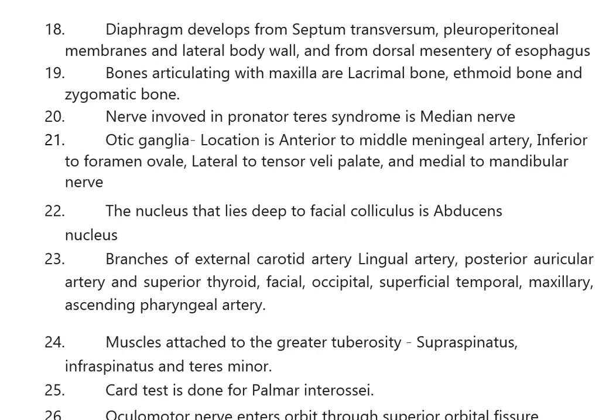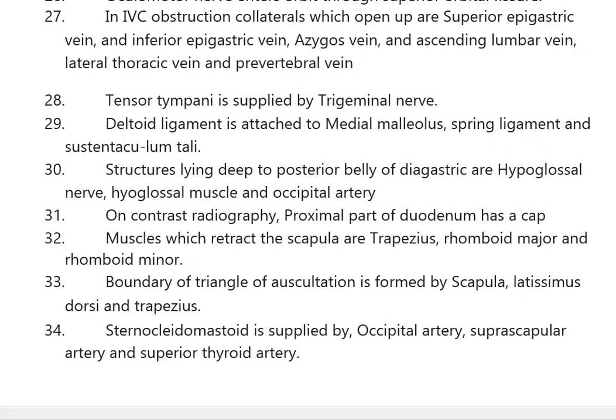The carpal tunnel test is done for palmar interosseous shake. The oculomotor nerve enters the orbit through the superior orbital fissure. In IVC obstruction, collaterals that open up are the superior epigastric vein, inferior epigastric vein, azygous vein, ascending lumbar vein, lateral thoracic vein, and prevertebral vein.